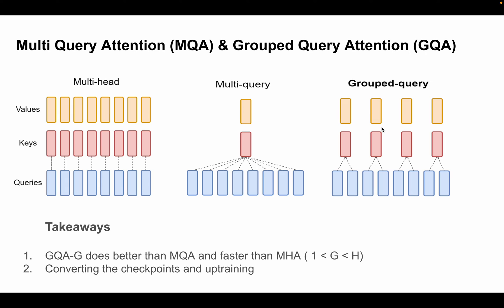GQA was not explicitly designed for encoder models because by nature encoders can be parallelized fully. Only in decoder models do we have the iterative token-by-token generation, where the output of one token feeds into the next, making GQA more suitable for decoder-only models. Multi-query attention, however, was tested on encoder-only, encoder-decoder, and decoder-only models, and in all cases a significant improvement in inference time was found.